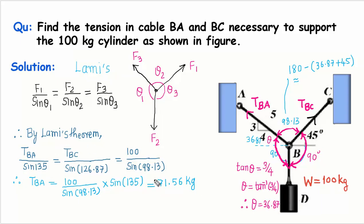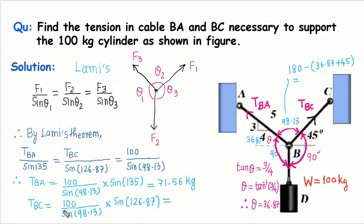Similarly, tension in BC will be equal to 100 divided by sine 98.13, multiplied by sine 126.87. If you solve this, you will get the value of tension in cable BC as 80.96 kg. So just by following Lamy's theorem, you can easily find out the tension in these cables — cable AB and cable BC. Thank you very much.